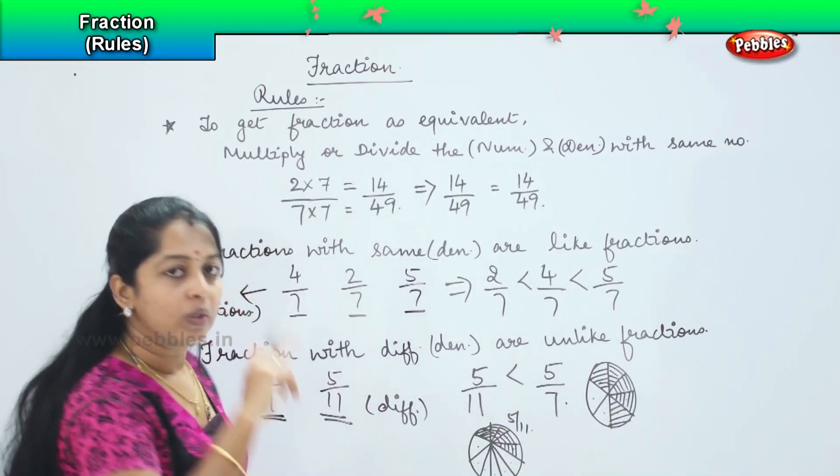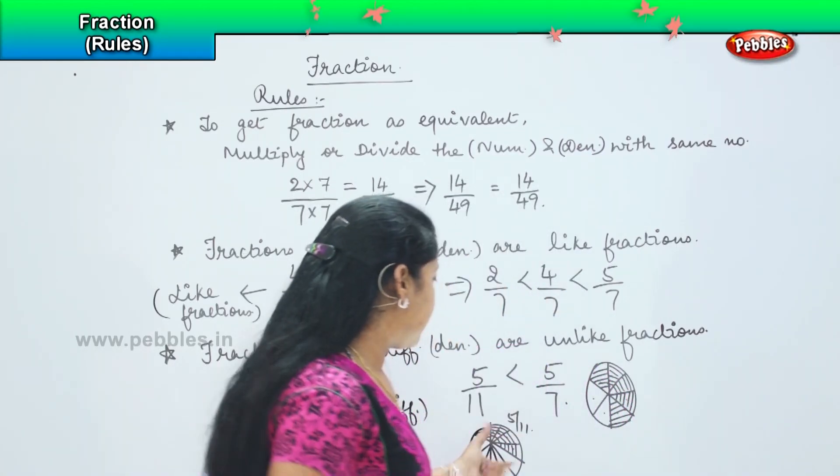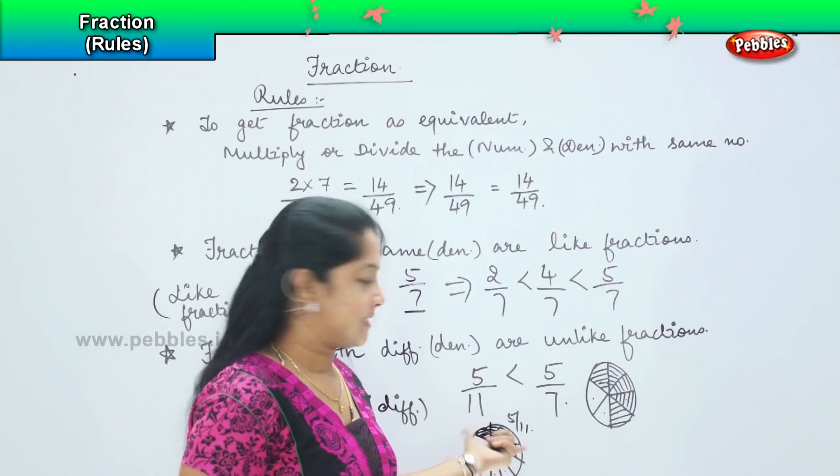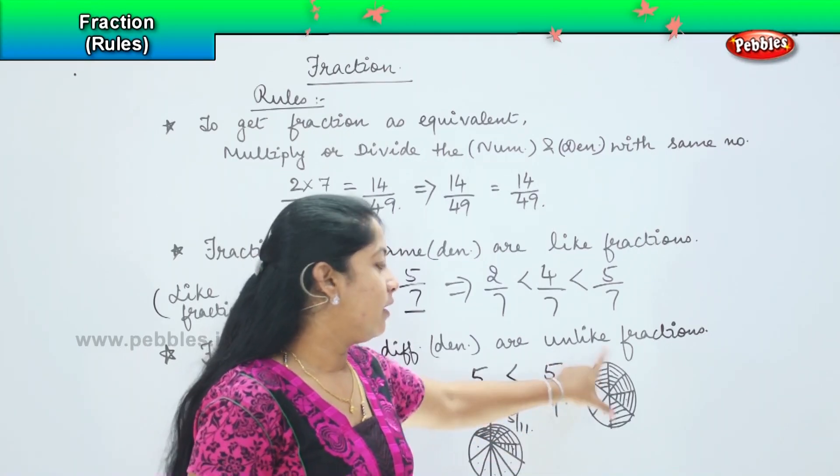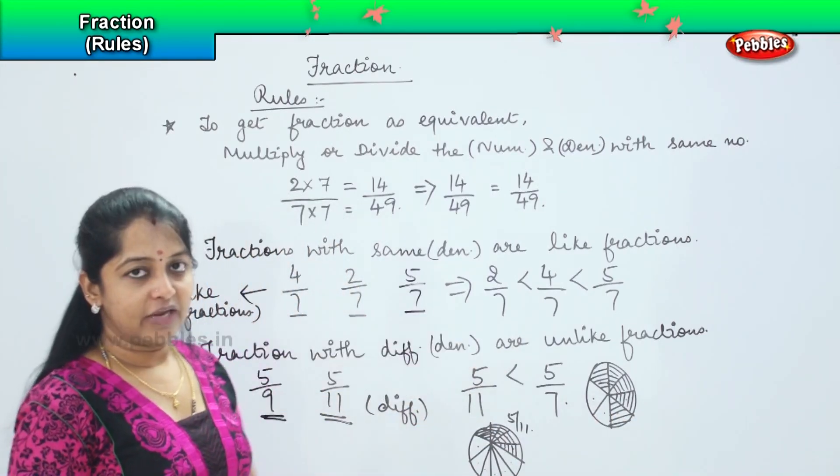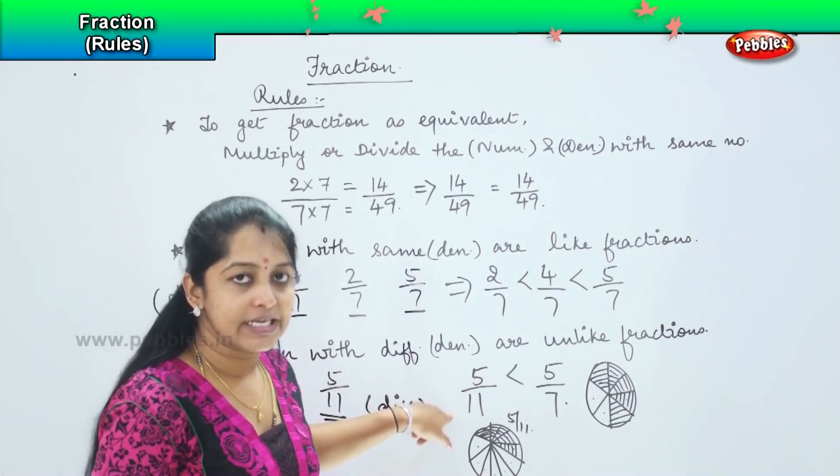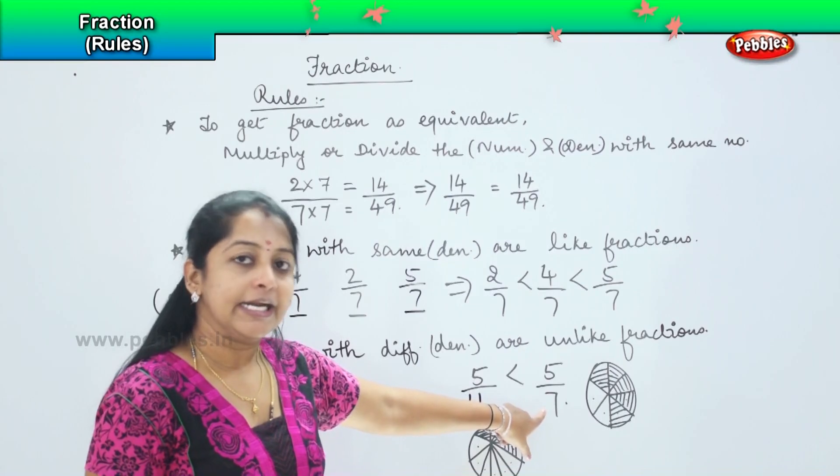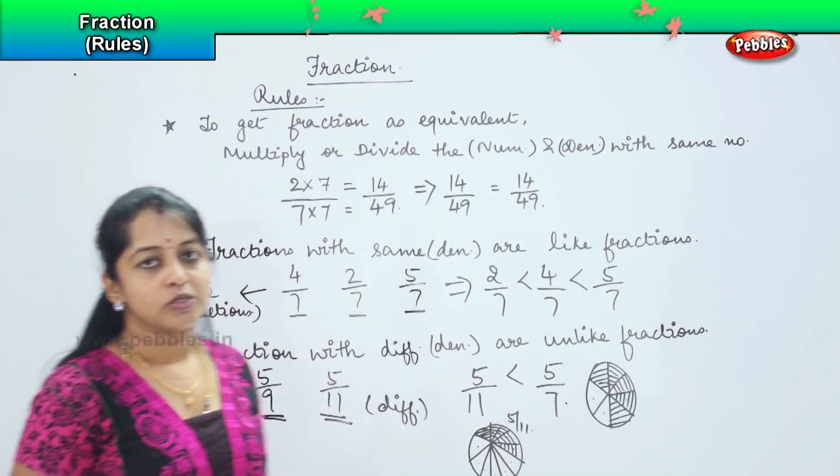When we have denominator more, when we have to divide the share more, in that case the proportion becomes less. Whereas if we have the denominator less, then the proportion consumed is more. So whenever you have an unlike fraction, the denominator's value, whichever is higher, will be the lesser one compared to the denominator with the lesser value. So are you clear with these rules, children?